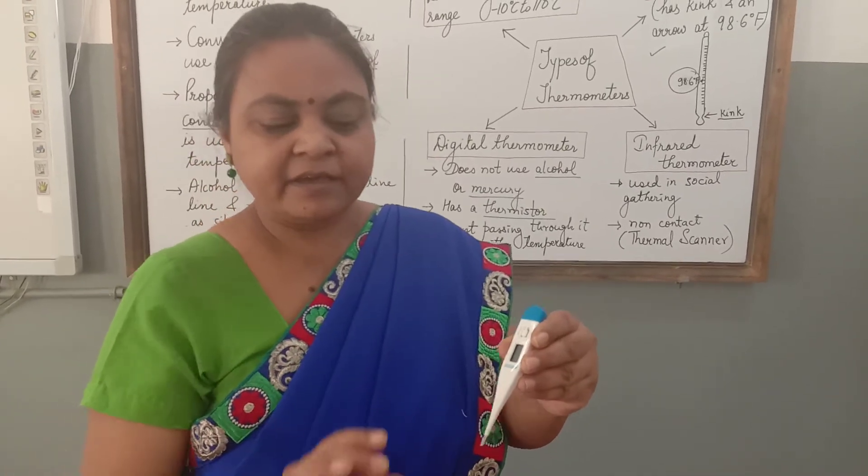Thermistor is a kind of device which is used in this digital thermometer. There is a cell also which allows the current to pass through the thermistor. And as the current passing through the thermistor changes, it changes with temperature. As the temperature changes, the current will change. And there is another device in this which makes a note of this change in temperature and shows that temperature in the digital display. You can see this digital display here.